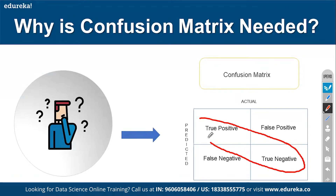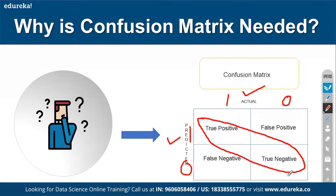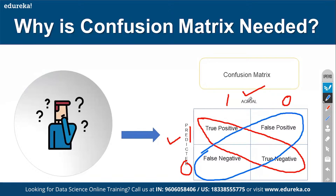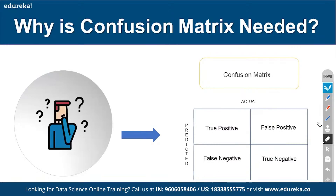The diagonal represents correctly classified output — my model predicts 1 and the actual output is also 1, or my model predicts 0 and the actual is also 0. These are called True Positive and True Negative. The off-diagonal represents misclassifications — for example, the actual is 0 but the model predicted 1, or vice versa. This off-diagonal data is the error data where the model incorrectly classified records.